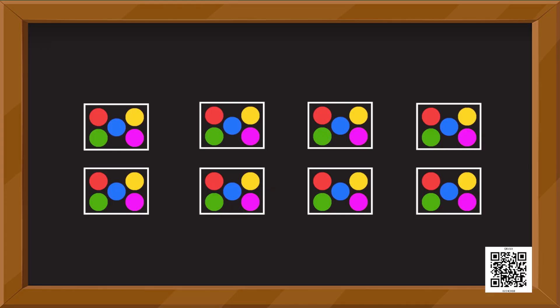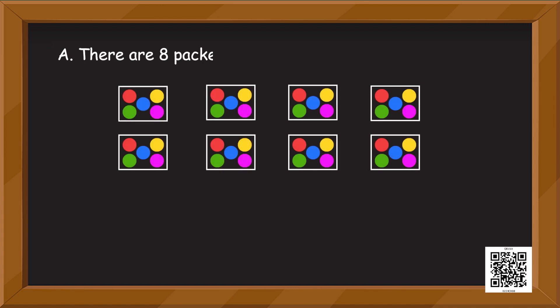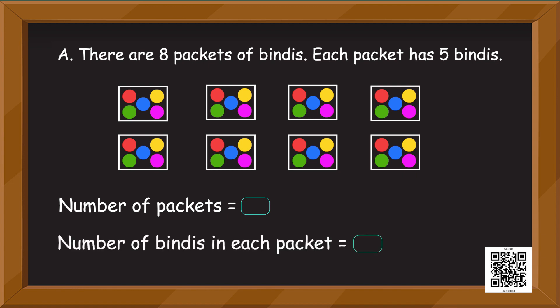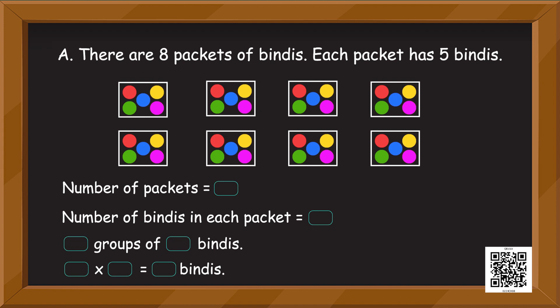On your screens can you see some bindis — just like the one on my forehead? There are eight packets of bindis and each packet has five bindis. Number of packets is equal to — can you count? Number of bindis in each packet is equal to — count just one packet, since the number is the same in all packets. Now fill in the blanks to tell me the total number of bindis.